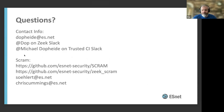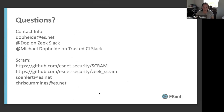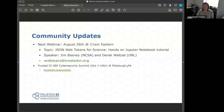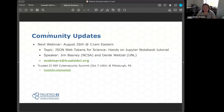And that brings us to the end. Pretty quick — a lot of information there. I'm happy to answer questions. Thank you so much for your time. Our next webinar is August 26th at 11 a.m. Eastern. The topic is JSON Web Tokens for Science: Hands-On Jupyter Notebook Tutorial, with speakers Jim Basney from NCSA and Derek Weitzel from University of Nebraska-Lincoln. More information can be found at trustedci.org/webinars, or contact us at webinars@trustedci.org.